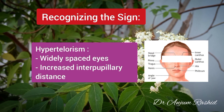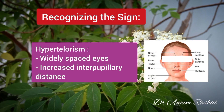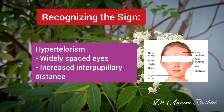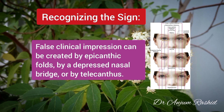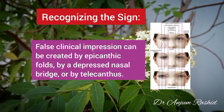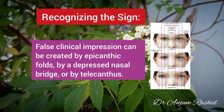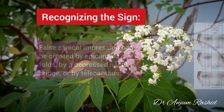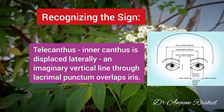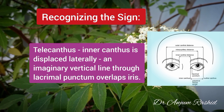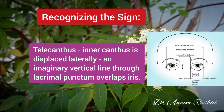Hypertelorism refers to widely spaced eyes, and by definition the interpupillary distance is increased. A clinical impression of hypertelorism can be created by epicanthic folds, by a depressed nasal bridge, or by telecanthus, in which the inner canthus is displaced laterally. The inner canthus marks the meeting point of the upper and lower eyelids on the medial side of the eye.